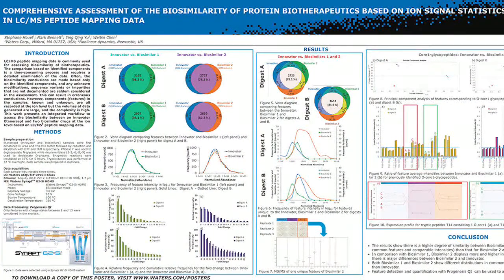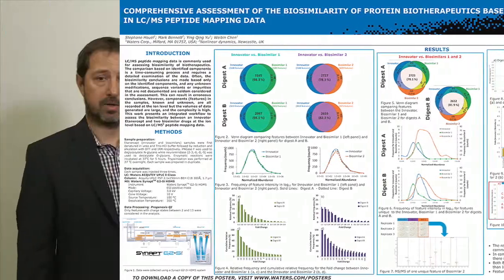In this poster we're going to describe the use of Progenesis QI, which is software that performs feature detection and quantification to assess the biosimilarity of Etanercept innovator and two biosimilars.